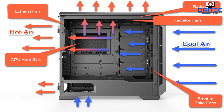The PSU at the bottom will draw air in from underneath and blow it out the back. You can also have the fan drawing air from inside the case. If you've got a shroud like on this case, the PSU fan would face down. This shows a basic setup with airflow in the correct direction for optimal performance. You can also have a side fan on the side window.